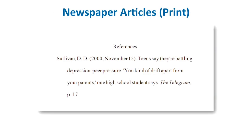Newspaper articles are cited the same way, with the year, month, and day in parentheses. The first letter of every major word in the name of a newspaper is capitalized and in italics. The one big difference is that when you are citing a newspaper article, you use the abbreviation p. to indicate the page number. This is the only time in your APA Style reference list that you ever do this.